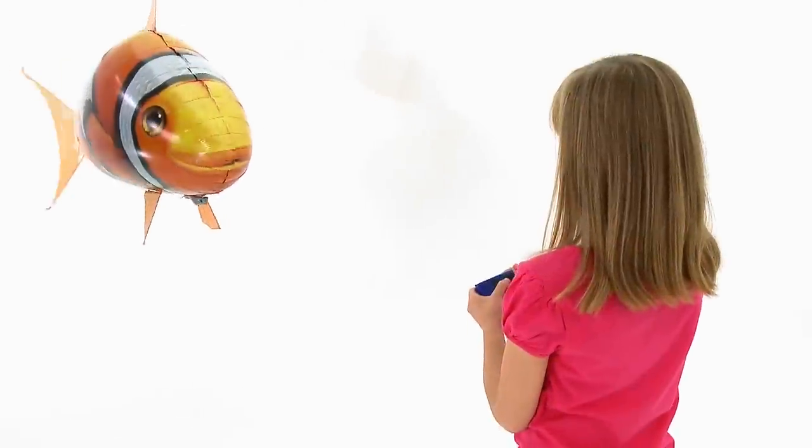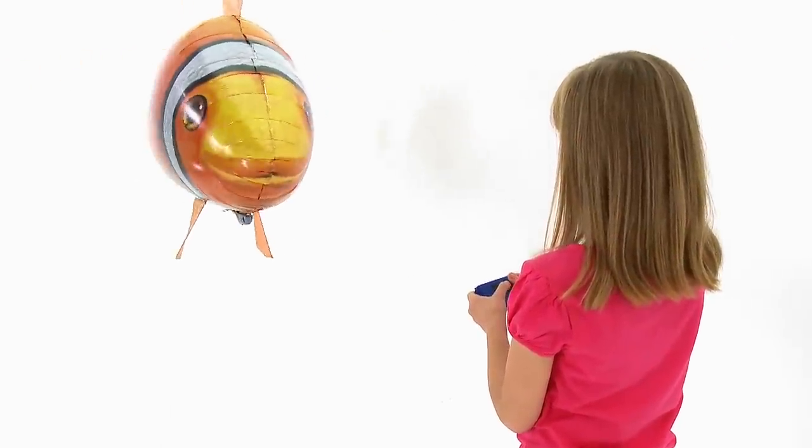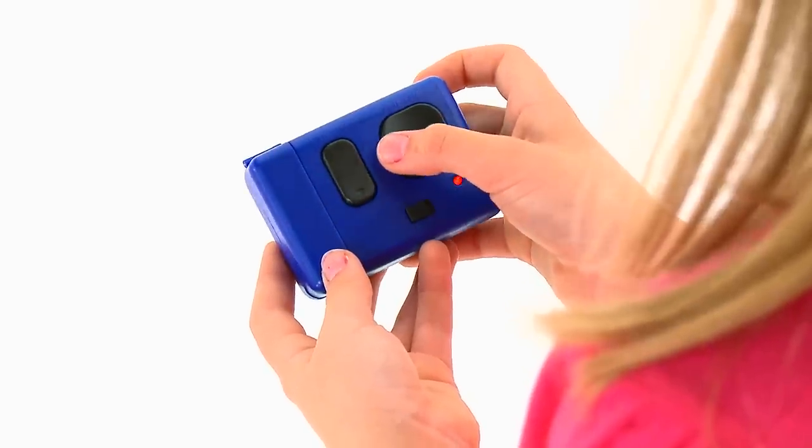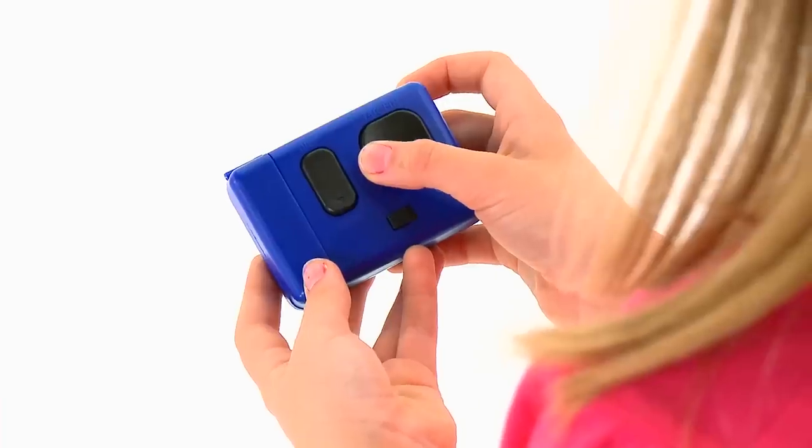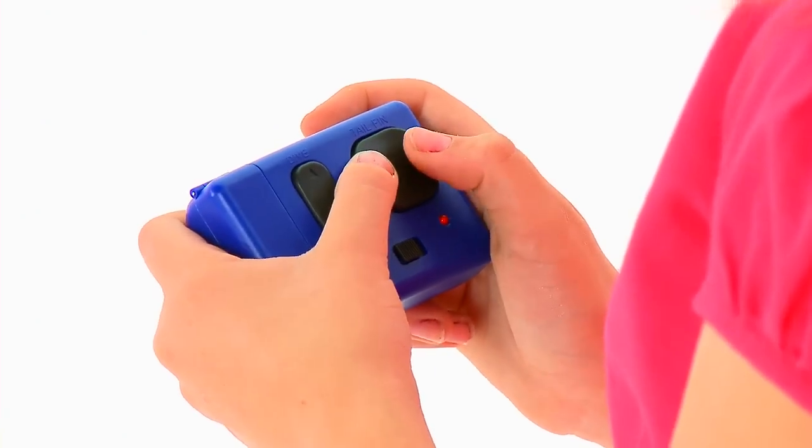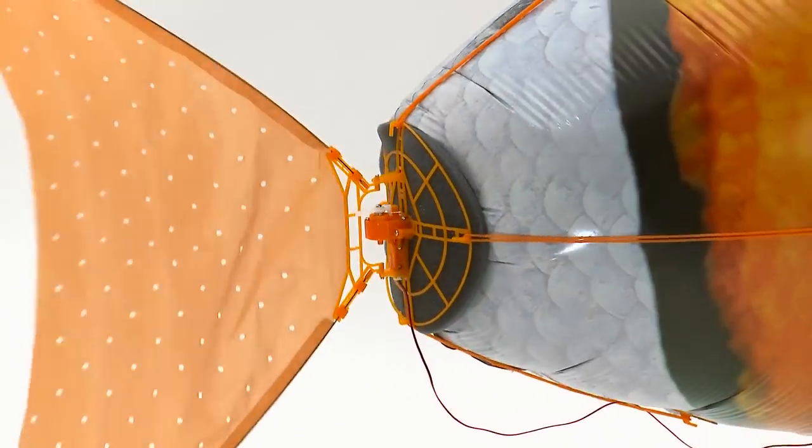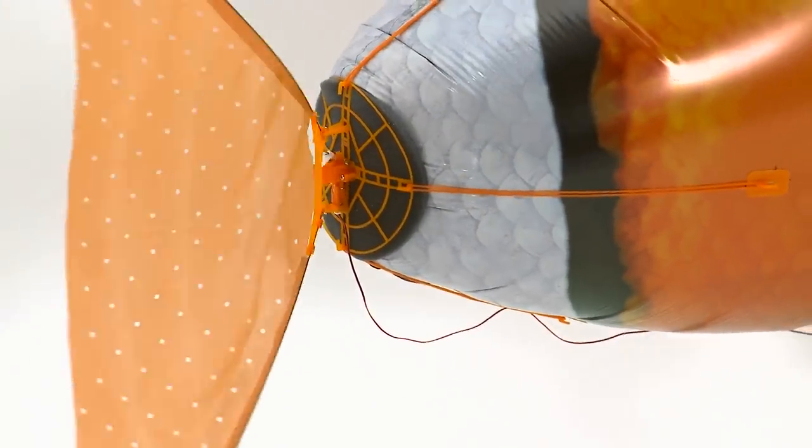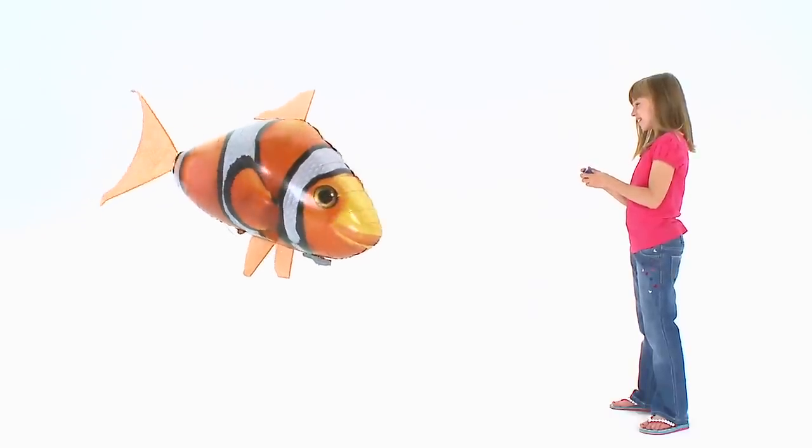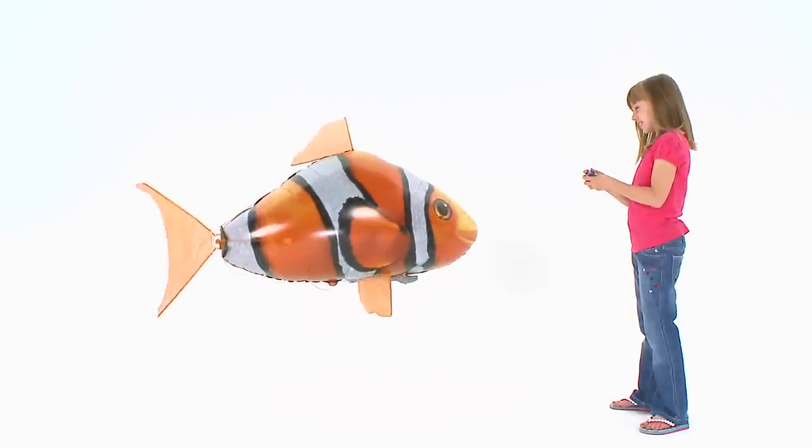Your Airswimmer flies by moving the tail from side to side in a constant rhythm. To move the tail to the left, press left on the remote. To move the tail to the right, press right on the remote. Move the tail left and right alternately to begin the swimming motion, and your Airswimmer will move forward. Try experimenting with faster and slower rhythms to find the most suitable speed for you.